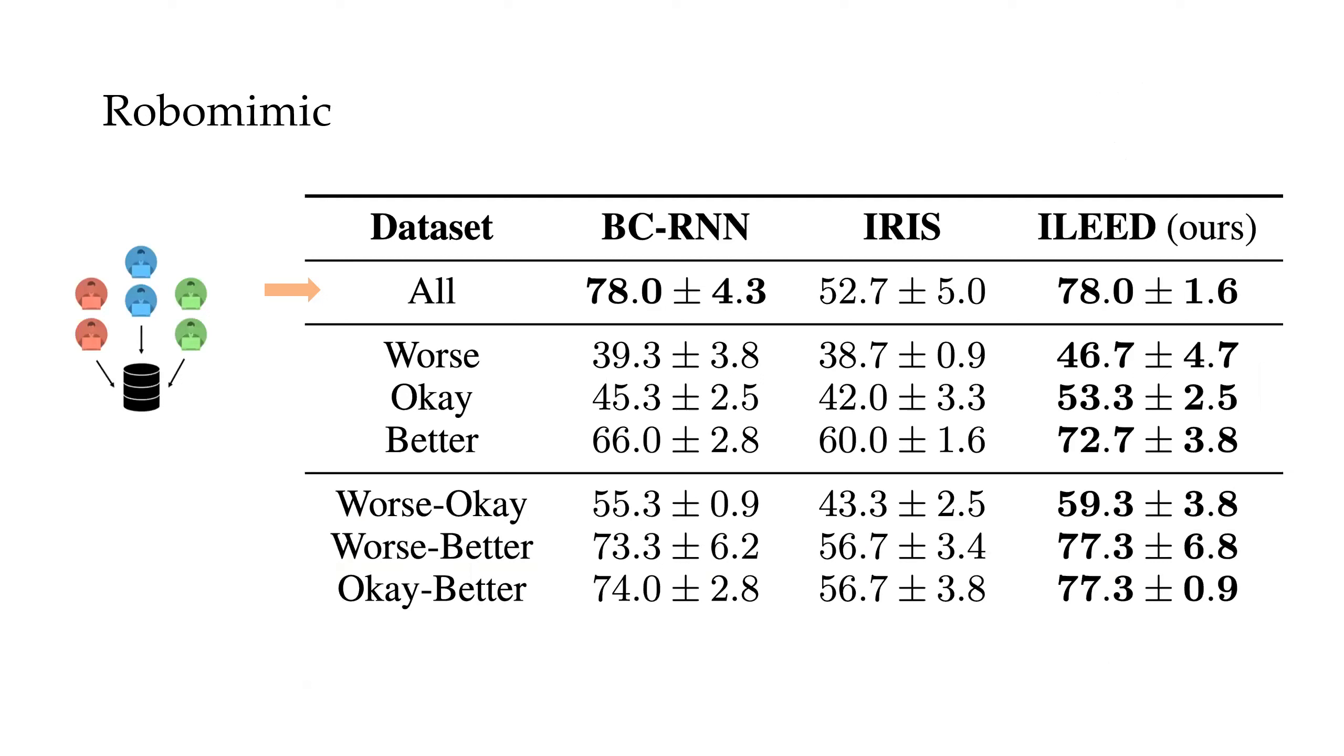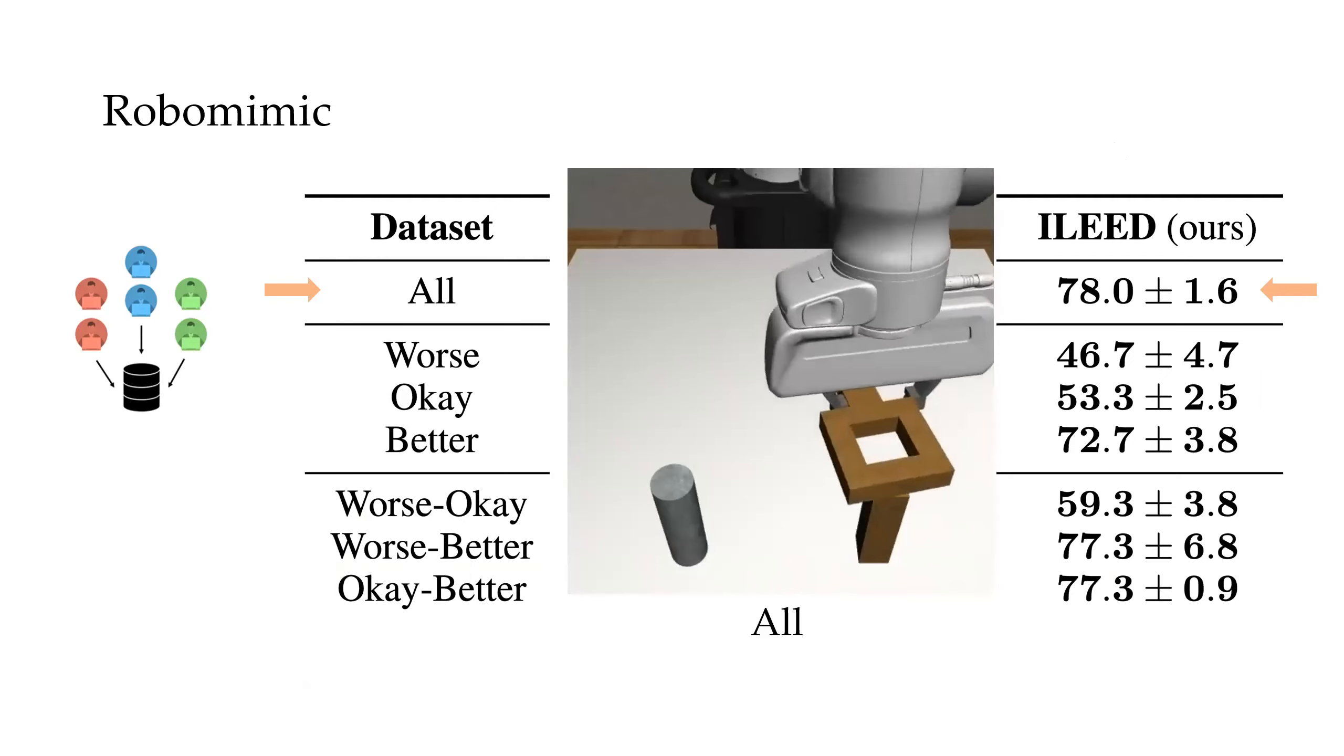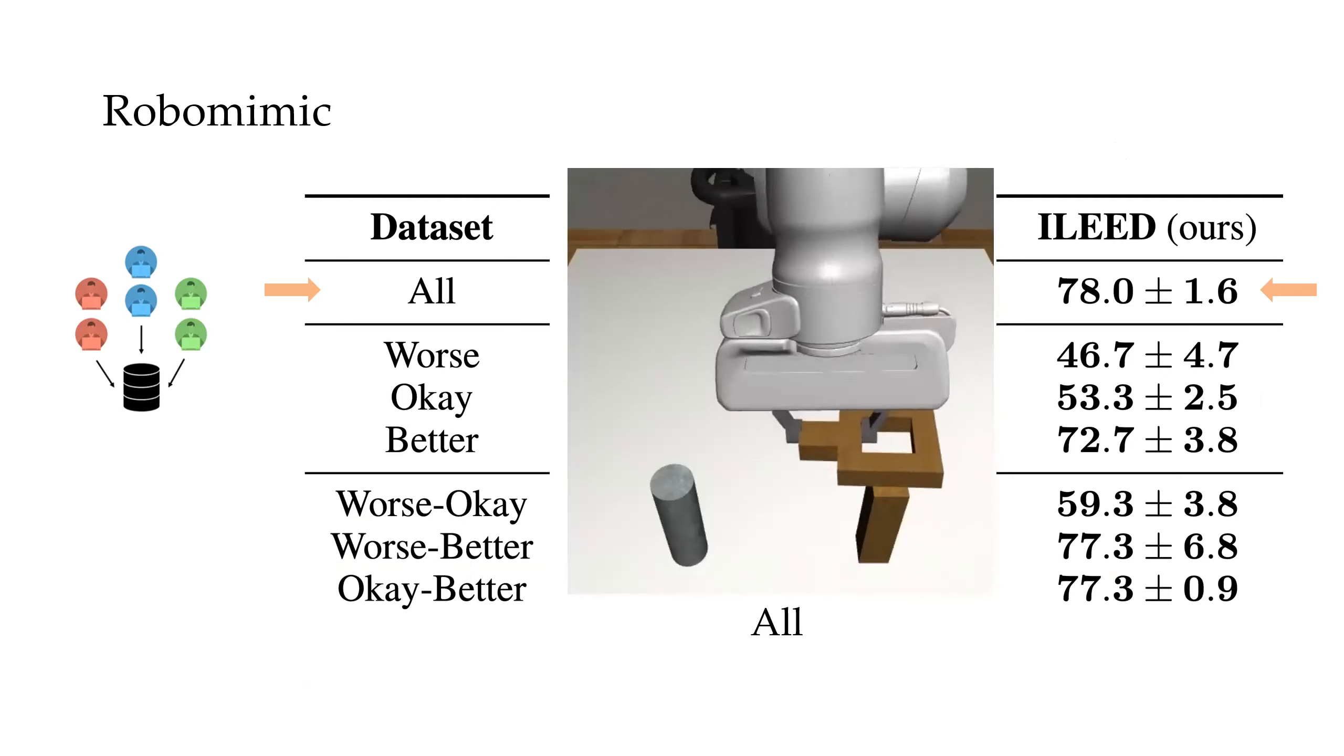Our results show that ILEAD outperforms the best methods reported by the study, behavioral cloning with recurrence and iris, for all configurations of the data set. I show some of the rollouts here. Now even though a policy from some optimal human data is challenging, ILEAD is able to consistently improve performance of imitation learning frameworks only by utilizing the demonstrator identities.